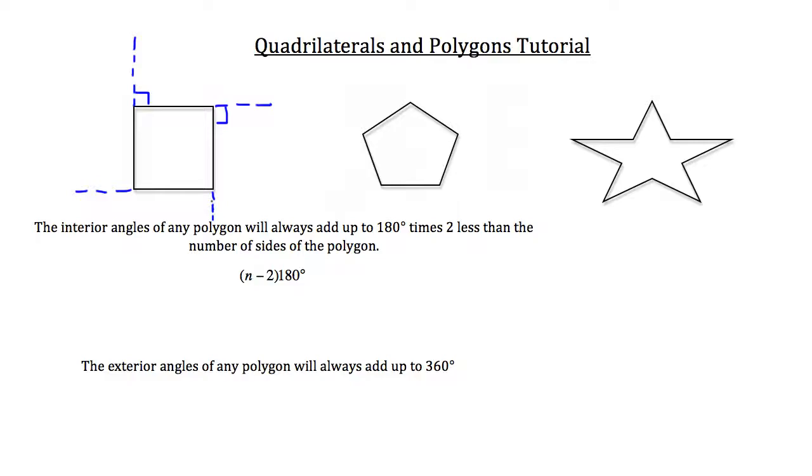So all those exterior angles, in this case there are four for the square, will always add up to 360 degrees. And with the square, because they come directly out of square sides, they're going to each be 90 degrees, which you know 90 times 4 is 360. So that works.